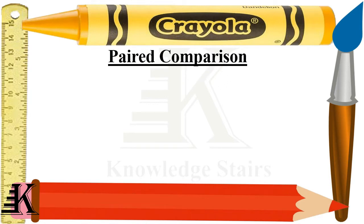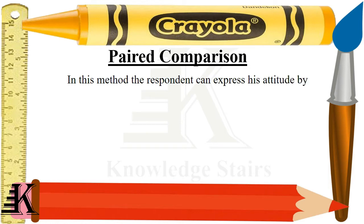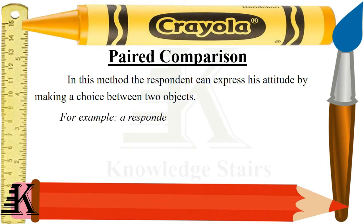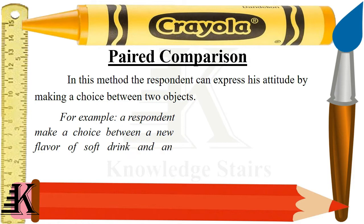Comparison. In this method, the respondent can express his attitude by making a choice between two objects. The respondent is given two objects and chooses one of them. For example, a respondent makes a choice between a new flavor of soft drink and an established brand of drink.